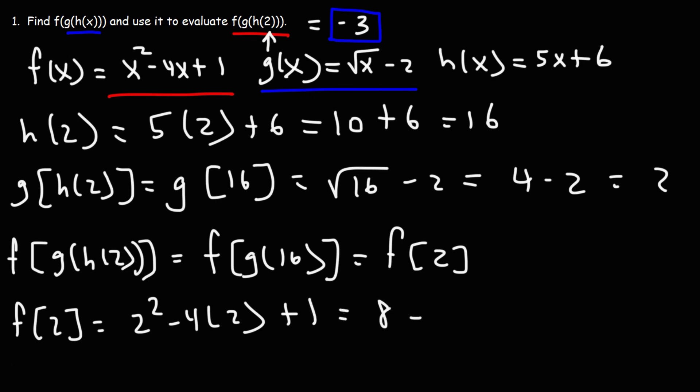2 squared is 8. I mean, no, 2 squared is not 8. 2 squared is 4. 4 times 2 is 8. Negative 8 plus 1 is negative 7. And 4 minus 7 is negative 3.